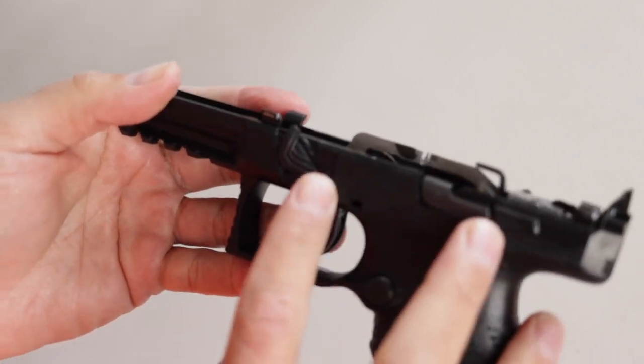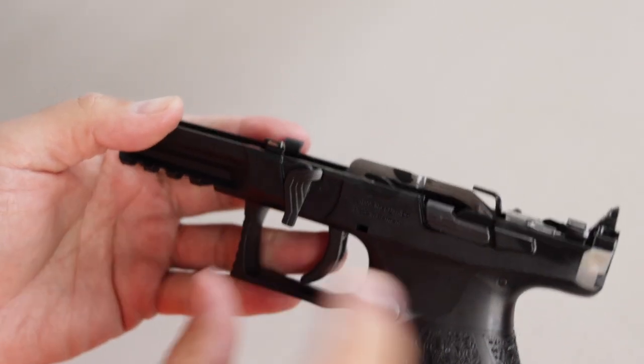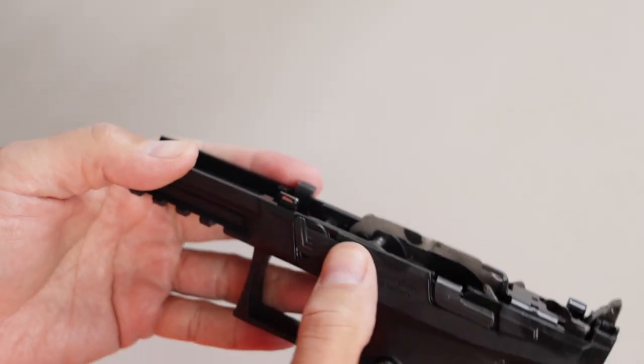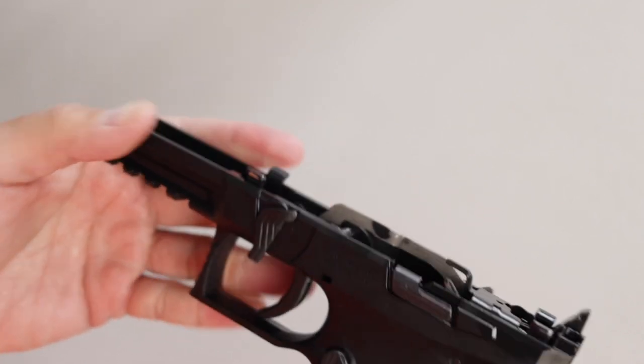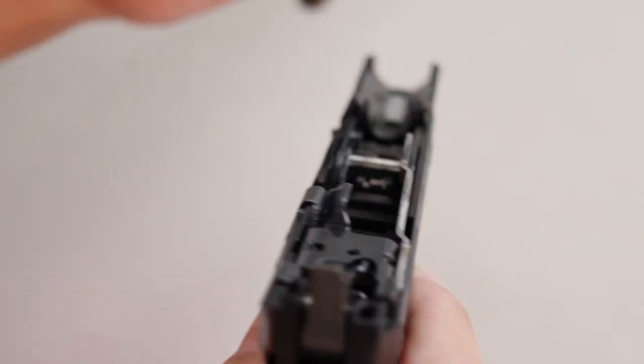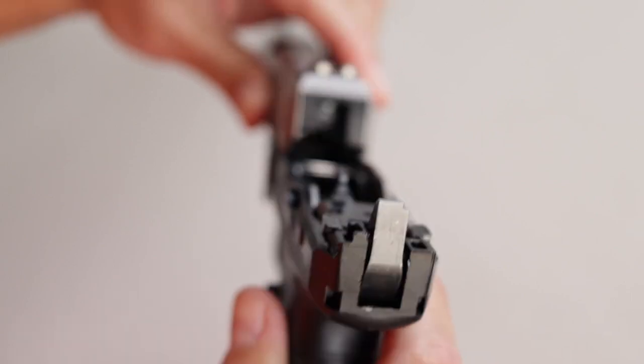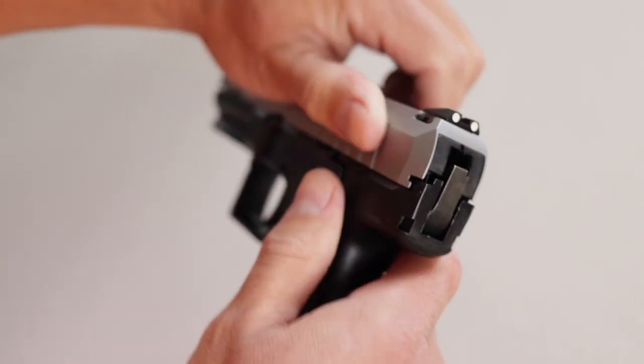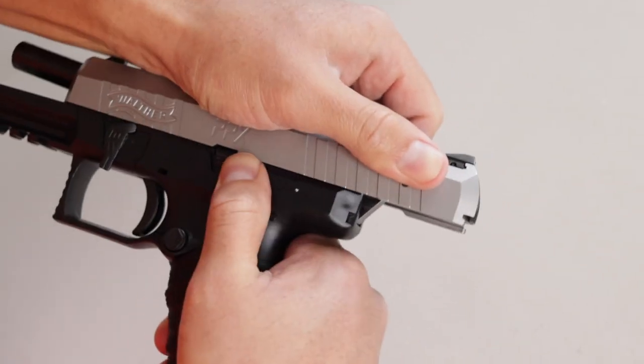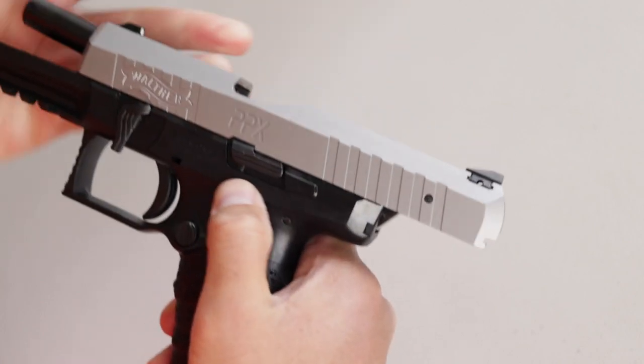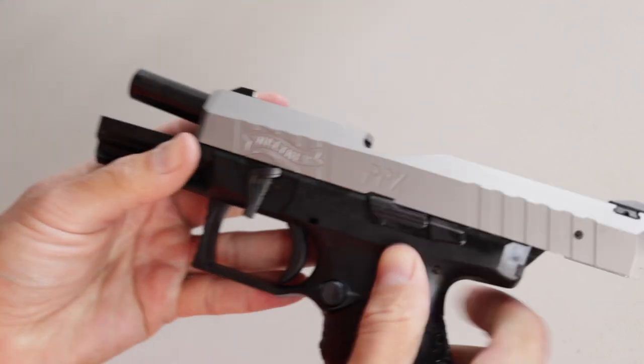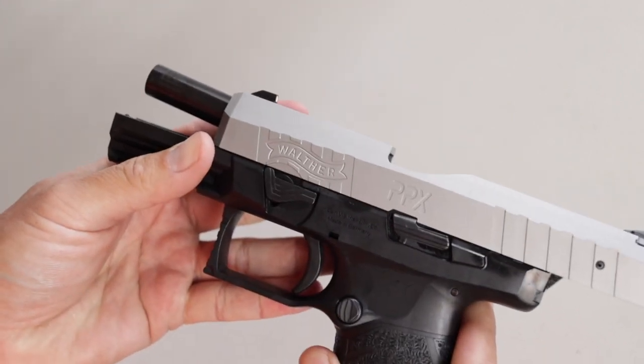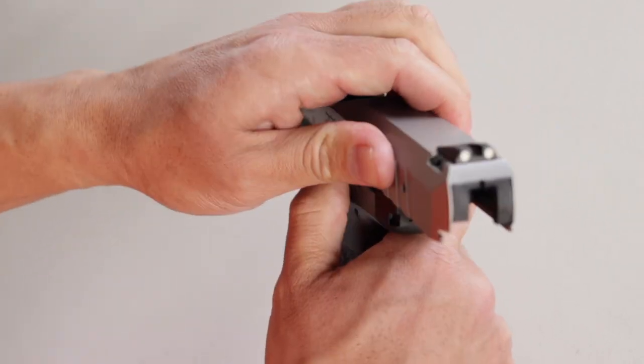Now before you put the slide back on, make sure the takedown lever is pointed down in the 6 o'clock position. I say that because sometimes it moves up by itself or maybe accidentally moved it like I did. Anyway, make sure it's down in 6 o'clock position. Grab the slide. Line it up with the rails. And pull it all the way back to the rear. Once the slide is in the rear-most position, push up on the slide lock to lock it in place. Return the takedown lever to the original position. Release the slide stop lever. And let the slide go home.